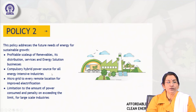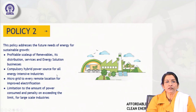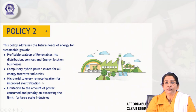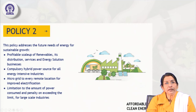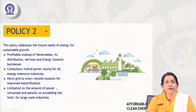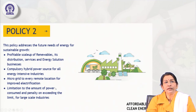Policy 2 also calls for compulsory hybrid power sources for all energy-intensive industries, meaning reliance on multiple sources of energy rather than just one. Micro grids are to be installed at every remote location for improved electrification — micro grids function like small-scale transformers for electric supply. There should also be a limitation on the amount of power consumed, with penalties for large-scale industries that exceed the limit.